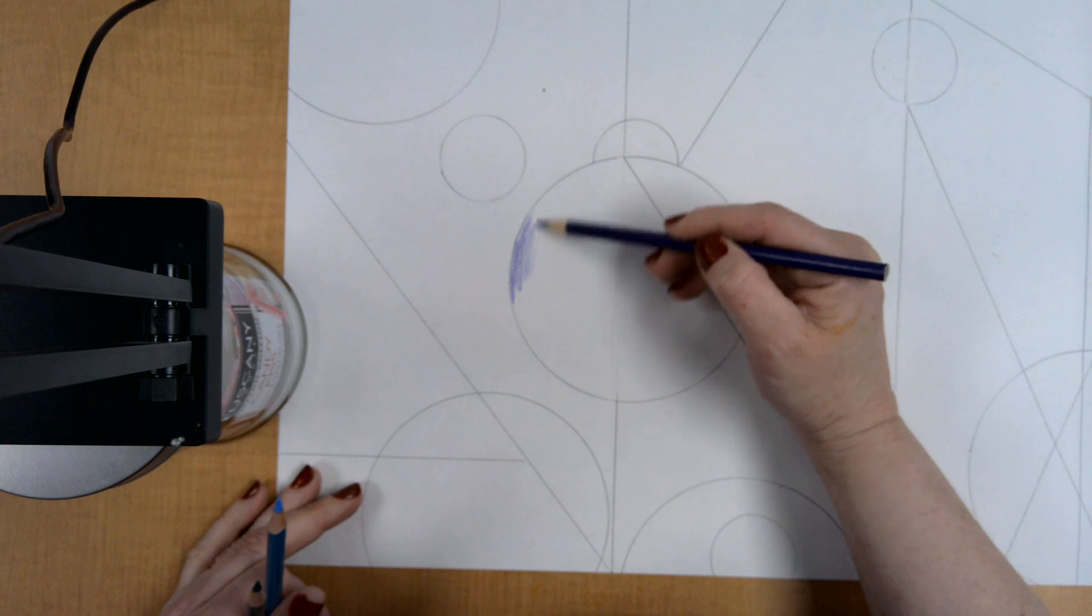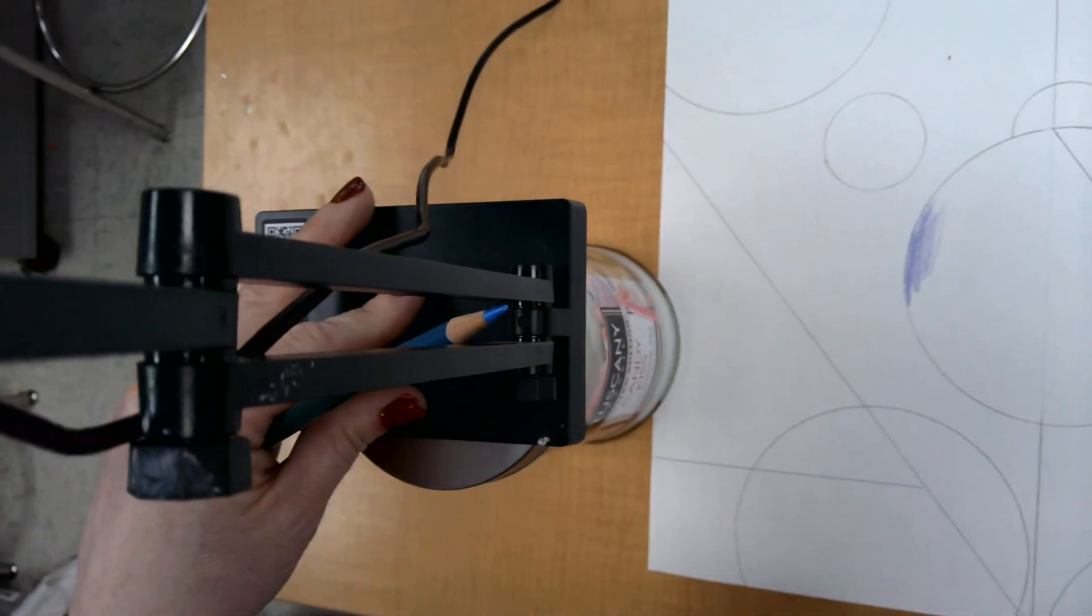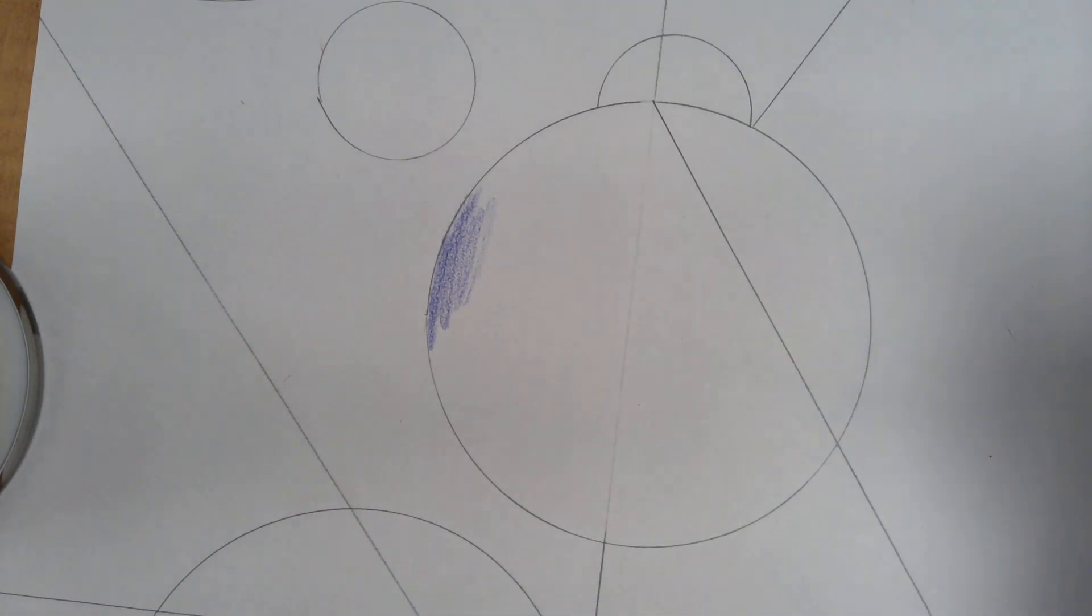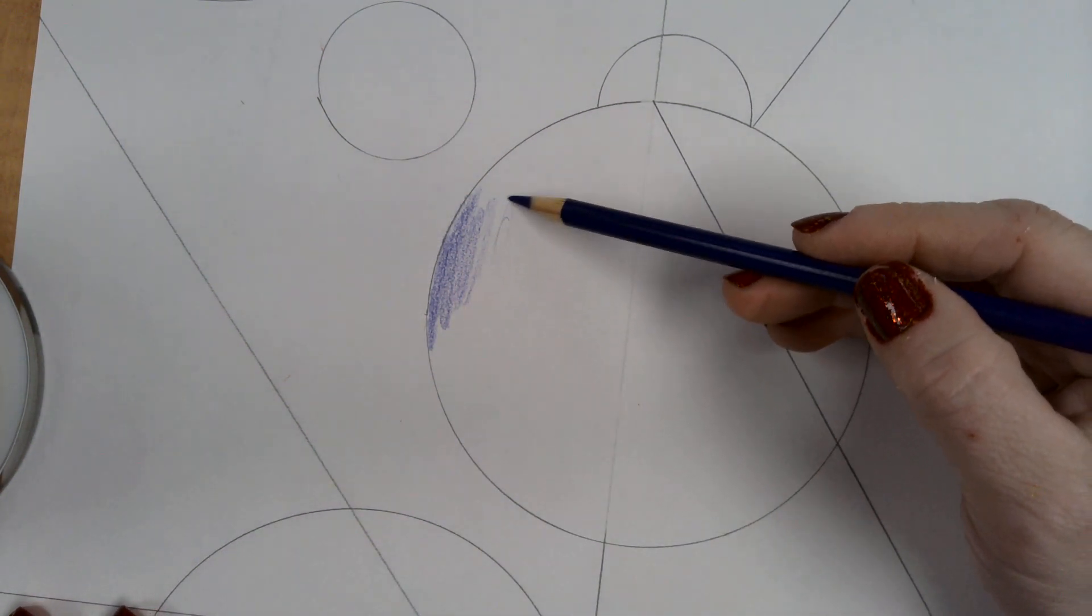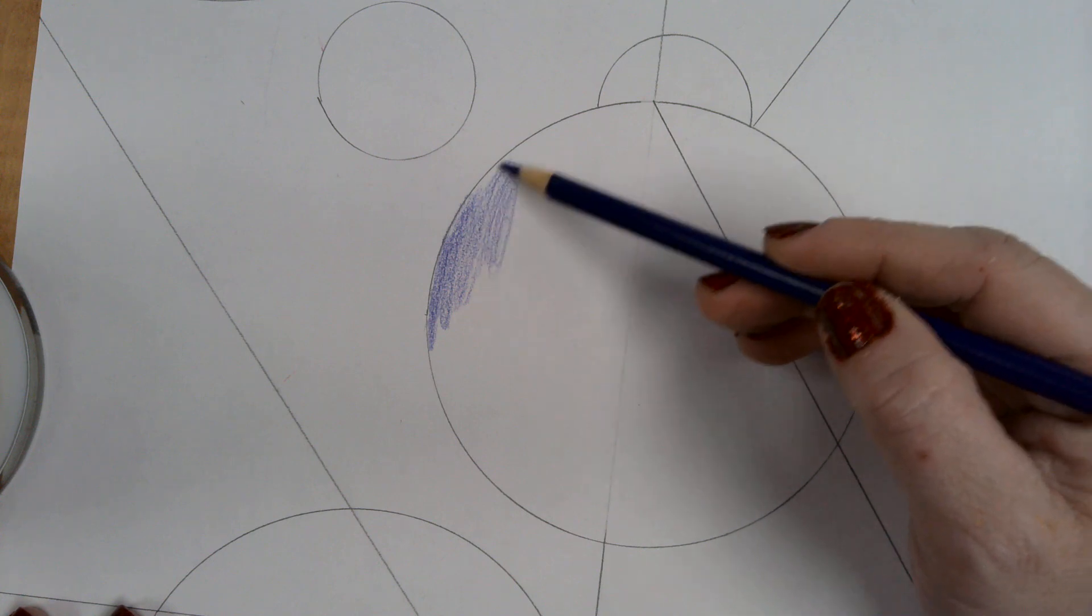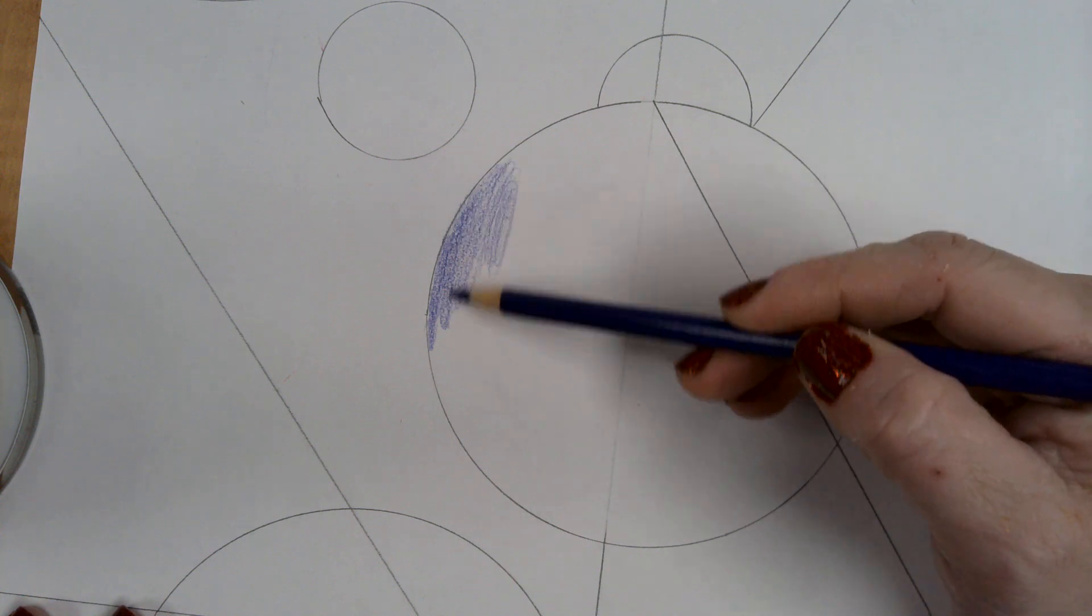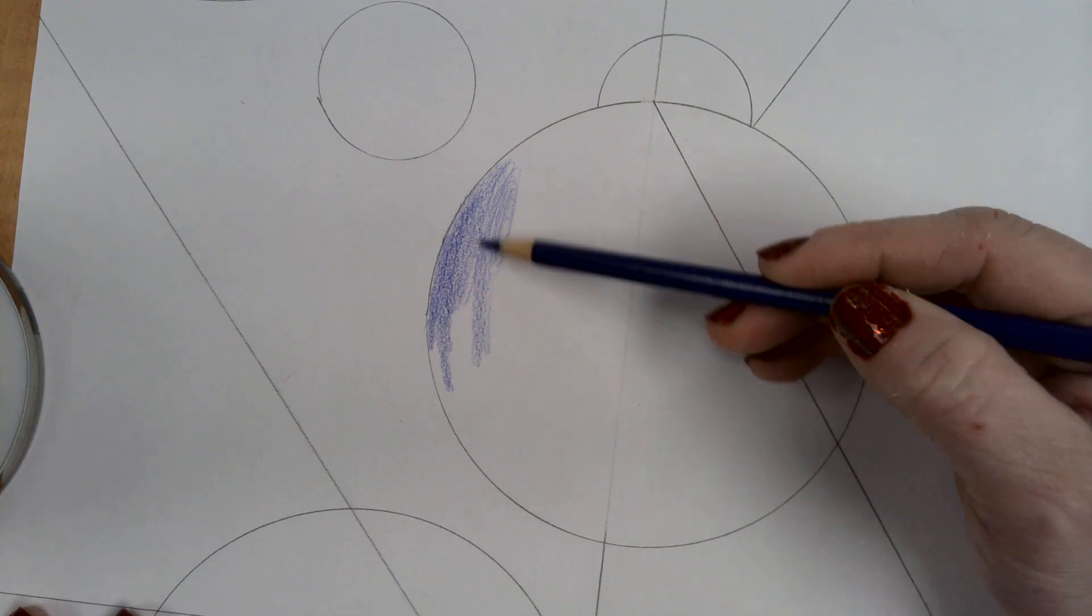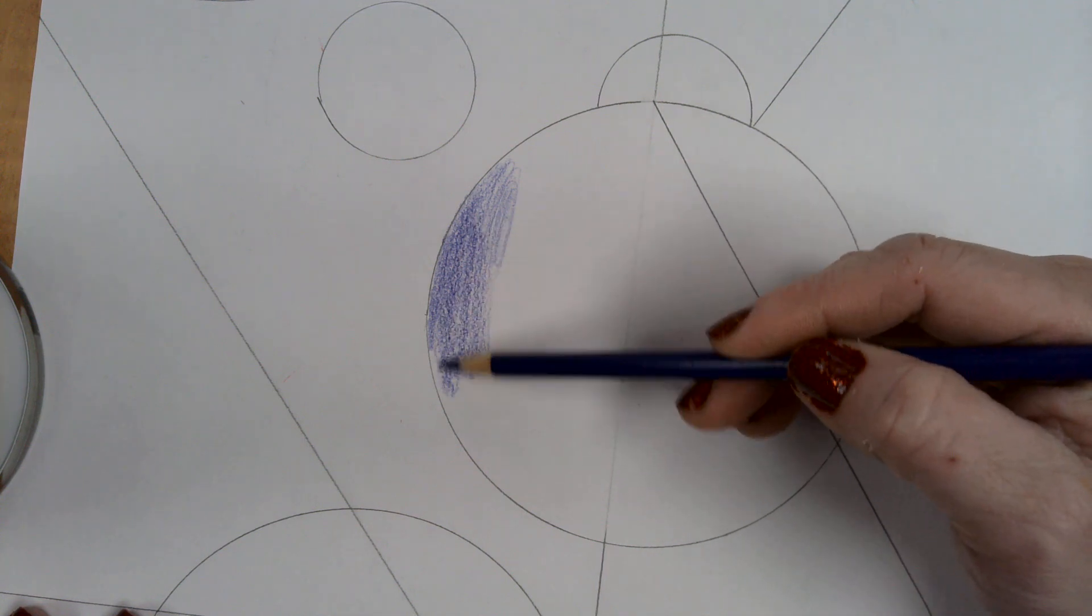And as I'm coloring in, I'm going to zoom in a little bit so you can see. I'm doing kind of like a circle method, light pressure. If I want it to be darker, I just stay the light pressure and I just repeat the light pressure.